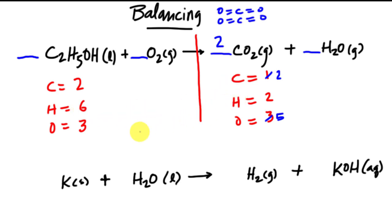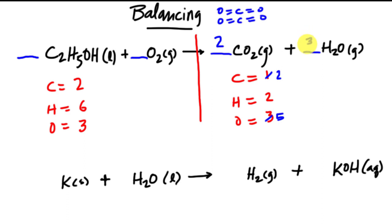Now I can balance the hydrogens or the oxygens. The tip here is that oxygen is by itself on the reactant side. If I were to balance oxygen first and then try to balance hydrogens, I'd disturb my carbons and oxygens. By balancing the hydrogens first, I can then come back and balance oxygen without changing any other coefficients. I have six hydrogens on the reactant side, so I need six on the product side — I'll put a three in front of water. Each water molecule has two hydrogens, so that's a total of six. Now I have to add up my oxygens: four oxygens here plus three on this side gives me a total of seven.